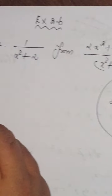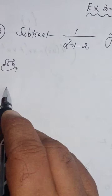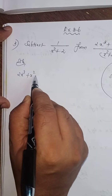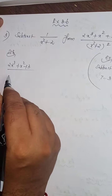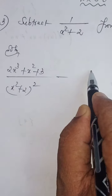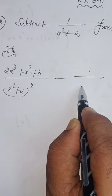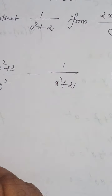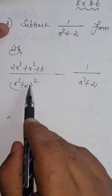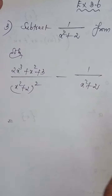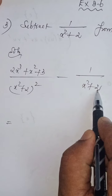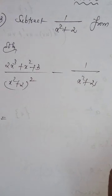So 'from this expression' means I have to write this expression first. Solution: 2x cubed plus x squared plus 3, divided by x squared plus 2, the whole square, minus this expression 1 by x squared plus 2. Now from these two we have to take the LCM. The LCM is obviously (x squared plus 2) whole squared.